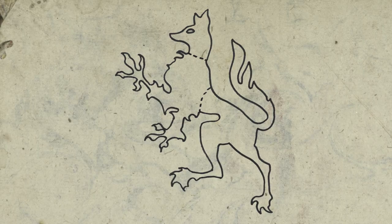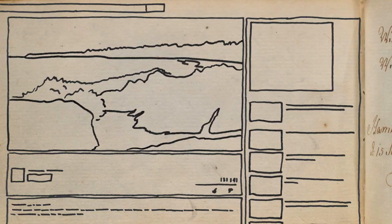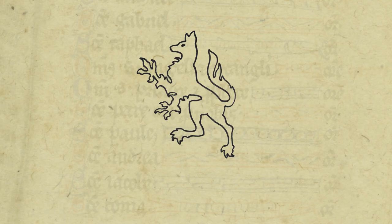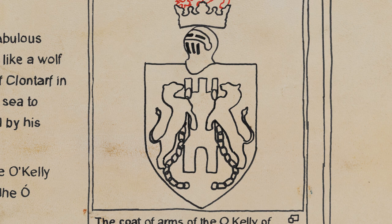So the story goes that such a thing sprang from the sea and fought for an Irish king. This creature is called an Enfield, and it crowns the O'Kelly clan's coat of arms.